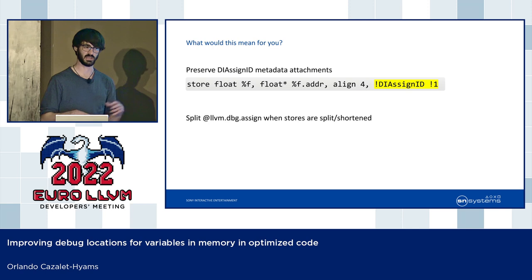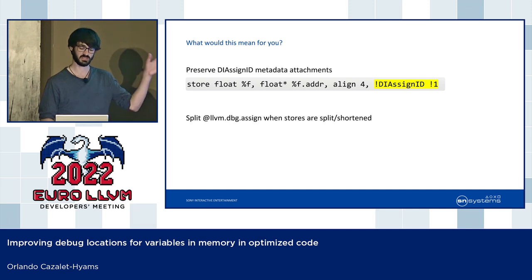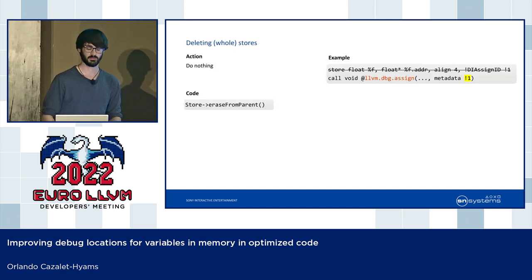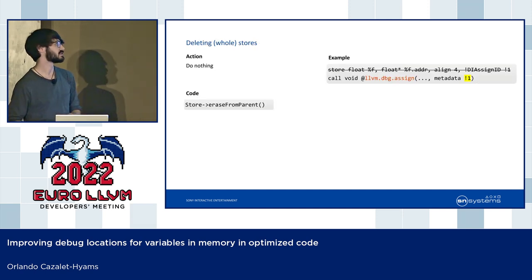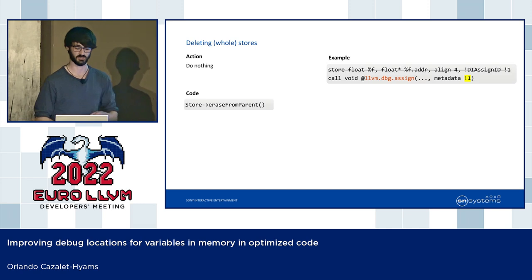What would this mean for you as an LLVM developer if this prototype turned into a real thing? The name of the game would be preserving the DIAssign ID attachments and very occasionally updating the intrinsics too. When you delete a store, you don't have to do anything — as I already explained, deleting the attachment is the desirable outcome there.